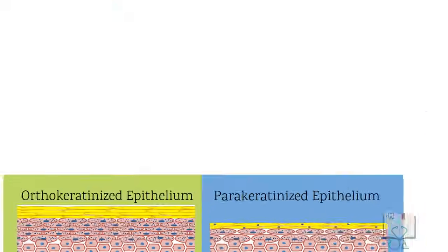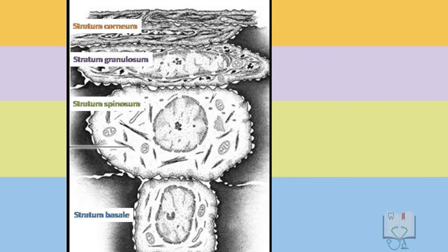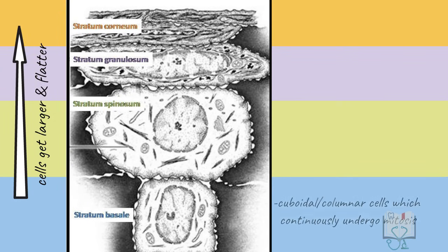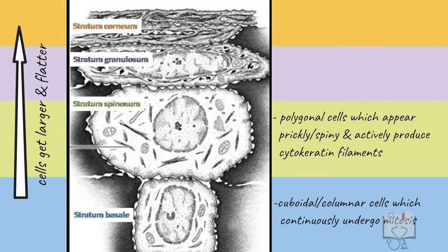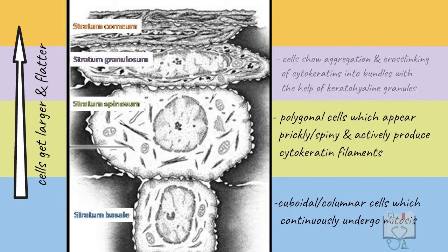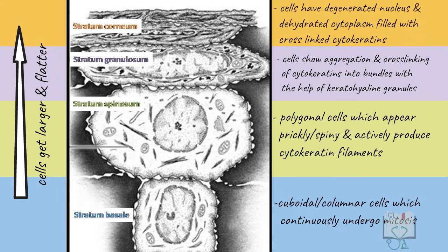As the epithelial cells undergo maturation and move through the various epithelial layers, all the changes taking place in the keratinocytes serve to produce a keratinized top layer, which makes the epithelium strong — an essential requirement in the masticatory mucosa.